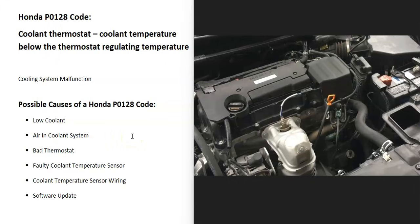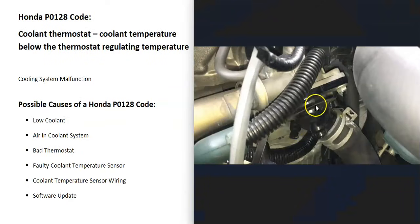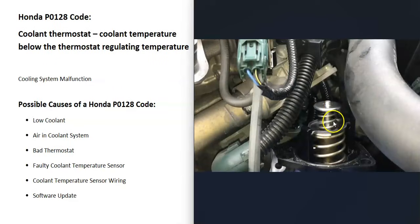The most common cause of this code is a bad thermostat — it's just gone bad, stuck closed or something like that. The thermostat location will vary depending on the Honda and the year. For example, on the 2016 Honda Accord it's located right down in here — there's a housing with one hose going to the radiator, and underneath that housing is the thermostat. A bad thermostat is the most common problem with this code.